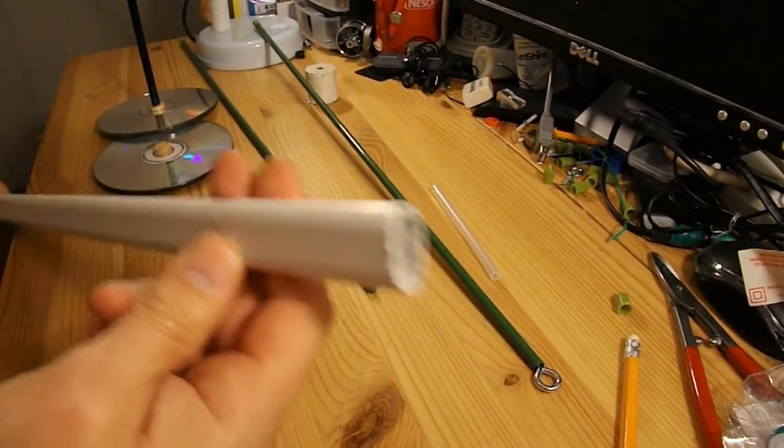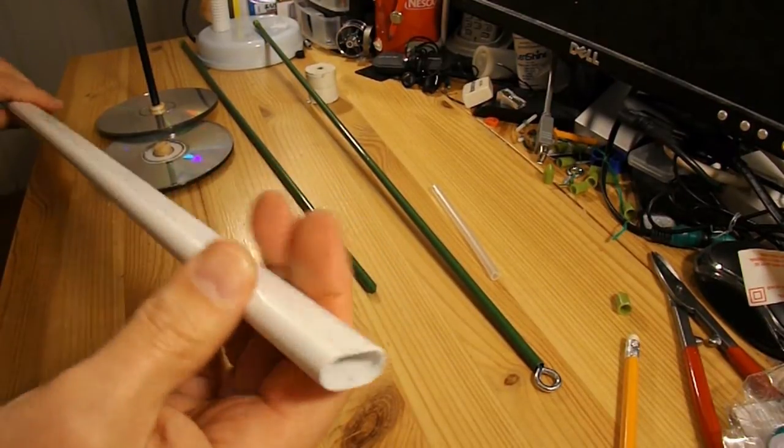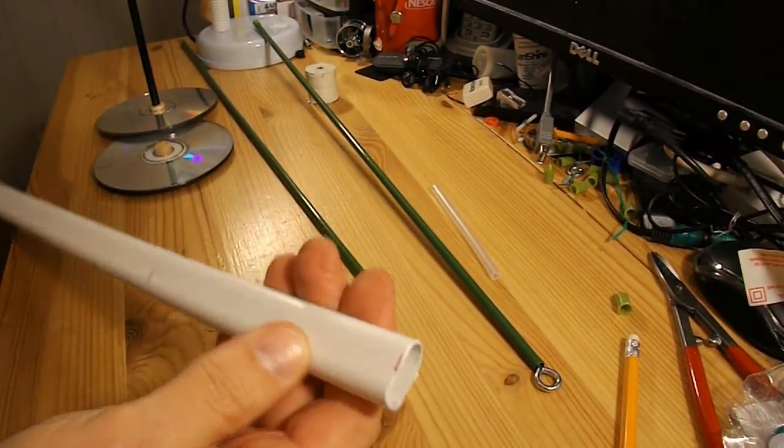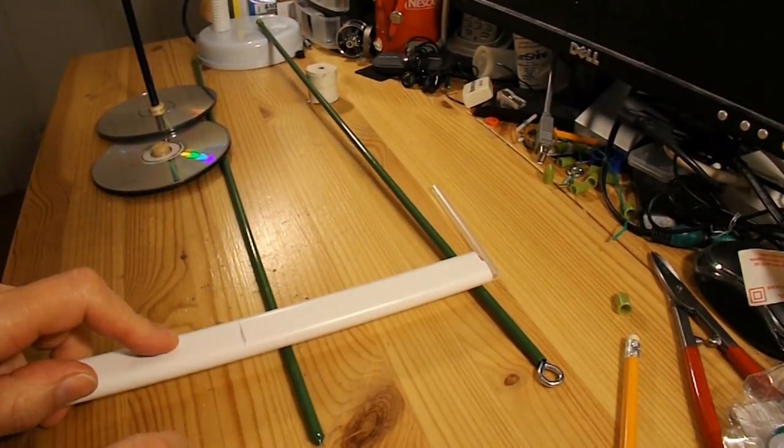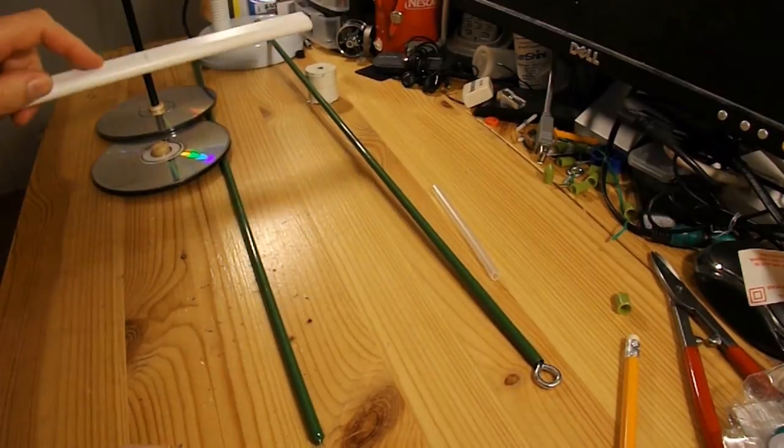I'm going to cut up some of this oval plastic conduit, or trunking, to act as the cross member at the front and the back.